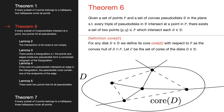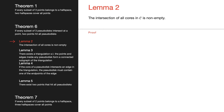Before we start the proof, we introduce a helpful definition. For any pseudodisk, we define its core as the convex hull of the points of P contained within it. We also define C as the set of all cores of our pseudodisks. Rather than proving Theorem 6 directly, we will prove some simpler lemmas from which Theorem 6 follows. Lemma 2 states that the intersection of all cores in C is non-empty.